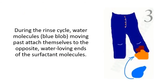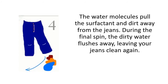During the drain cycle, water molecules moving past attach themselves to the water-loving ends of the surfactant molecules. You can see the blue-colored water attaching to the surfactant. Both the water and surfactant are attached to the dirt, and finally the water molecules pull the surfactant and the dirt away from the cloth. This is how we are able to clean the cloth.